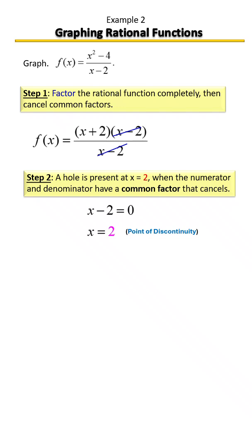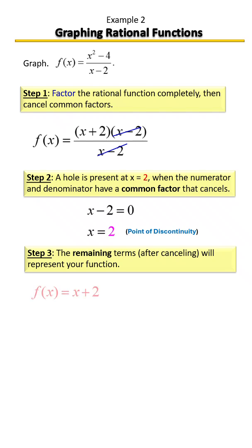Now, whatever is left, once you cancel that out, is your function. It represents your graph of your function. In this case, what's left is x plus 2.